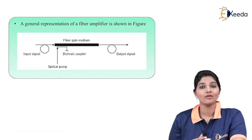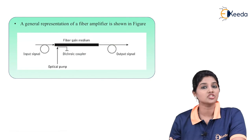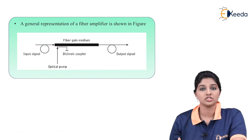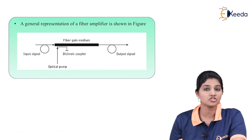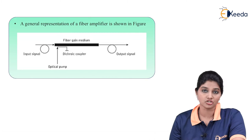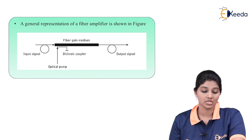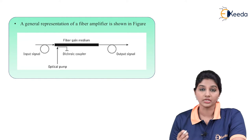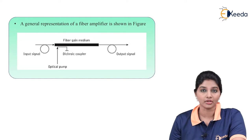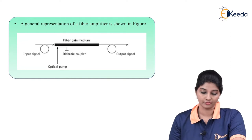Now let's look at the general representation of an optical amplifier. The figure shows the general representation of the optical amplifier, which has an input signal. The fiber gain medium is nothing but the optical amplifier itself.